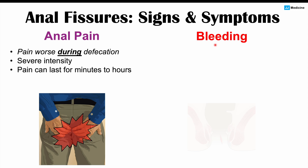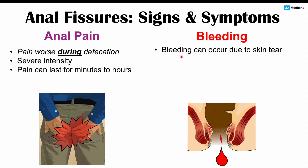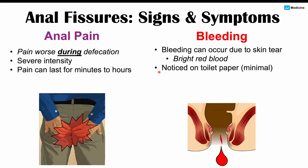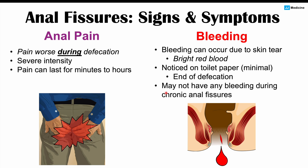Bleeding also occurs with anal fissures. If there is a tear in the skin, that is going to cause bleeding. The bleeding is bright red and minimal, and it will most commonly be noticed on toilet paper at the end of defecation. You may see a little in the toilet, but mostly on the toilet paper. Importantly, there may not be any bleeding in chronic anal fissures — in that case, patients may only have pain with every bowel movement.